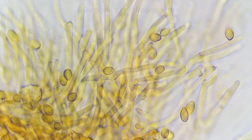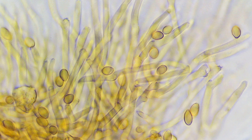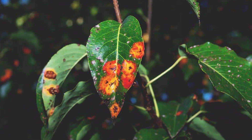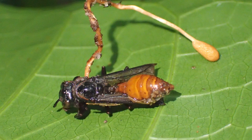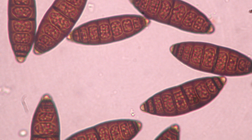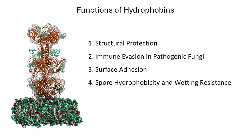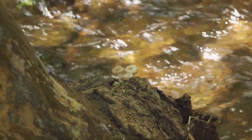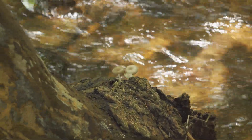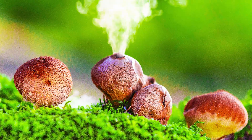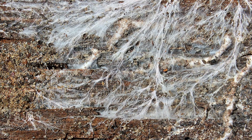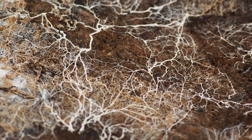Third, surface adhesion: the hydrophobic coating of spores enhances their ability to attach to various surfaces, including plant leaves, insect cuticles, and human tissues, facilitating colonization and dispersal. Fourth, spore hydrophobicity and wetting resistance: the rodlet layer prevents spores from becoming saturated with water, ensuring they remain buoyant and easily dispersed in the air. This hydrophobicity is essential for maintaining spores in a dormant state until they reach a suitable environment for germination.